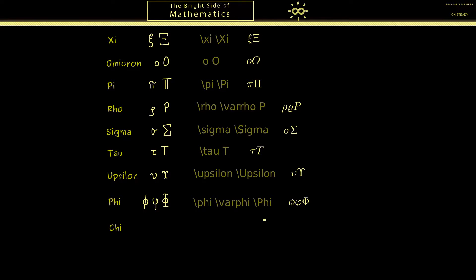The next letter is chi. It's not hard to draw, and we only use the lowercase version because the capital one looks like a capital X. Not surprisingly, we use the command backslash chi to produce this x-like symbol.